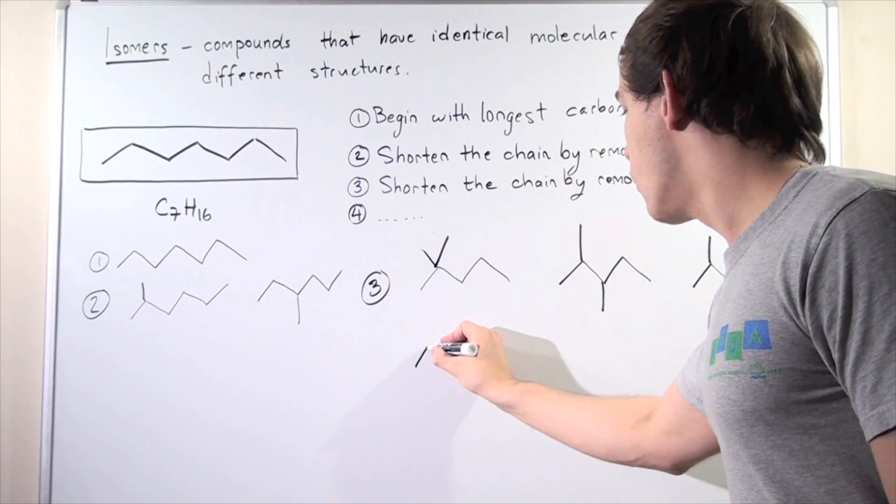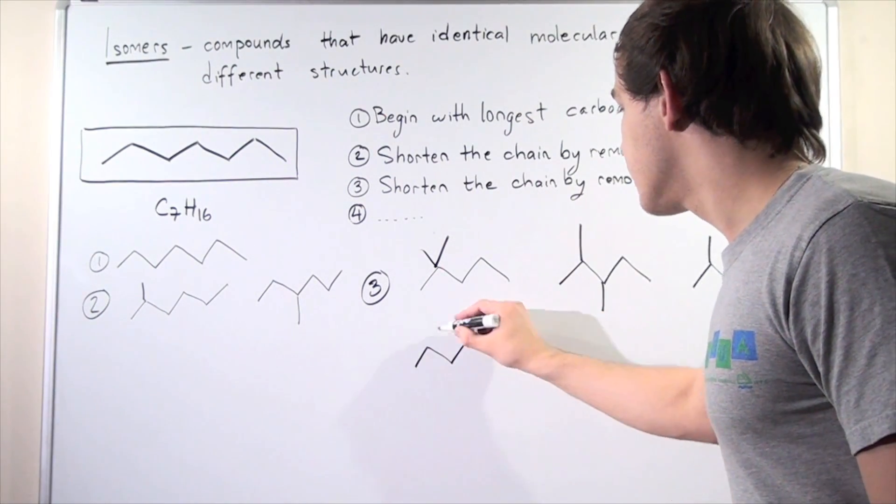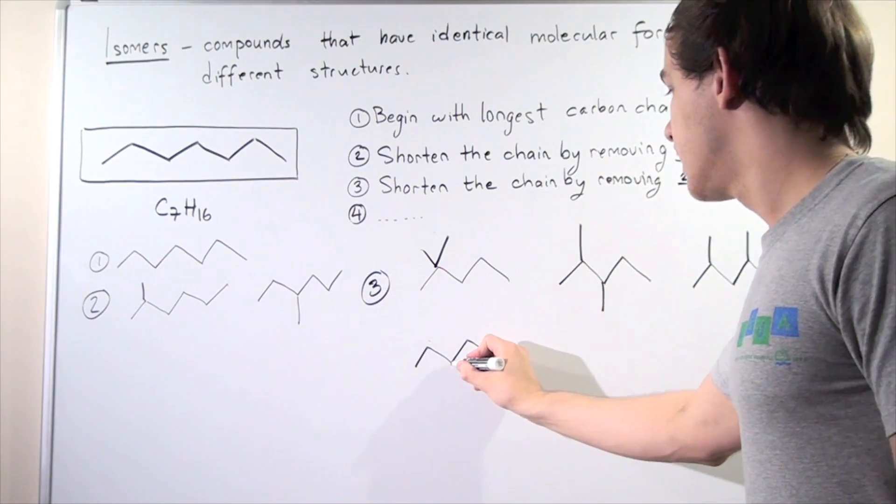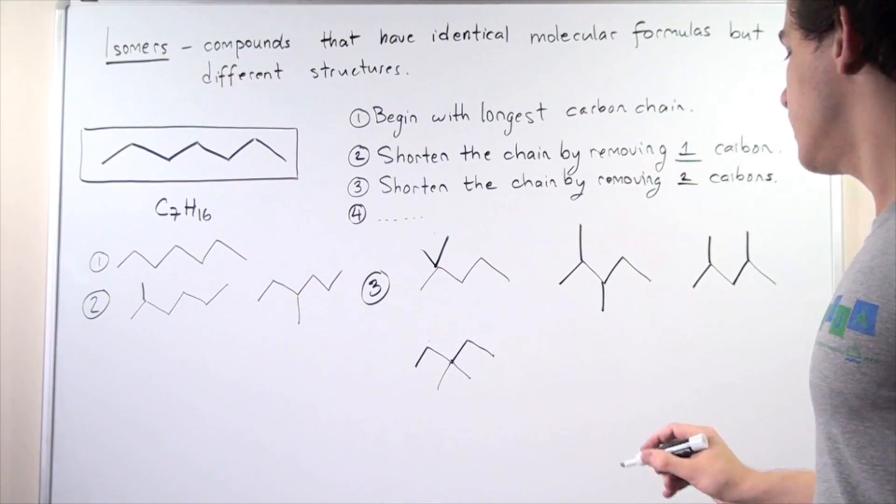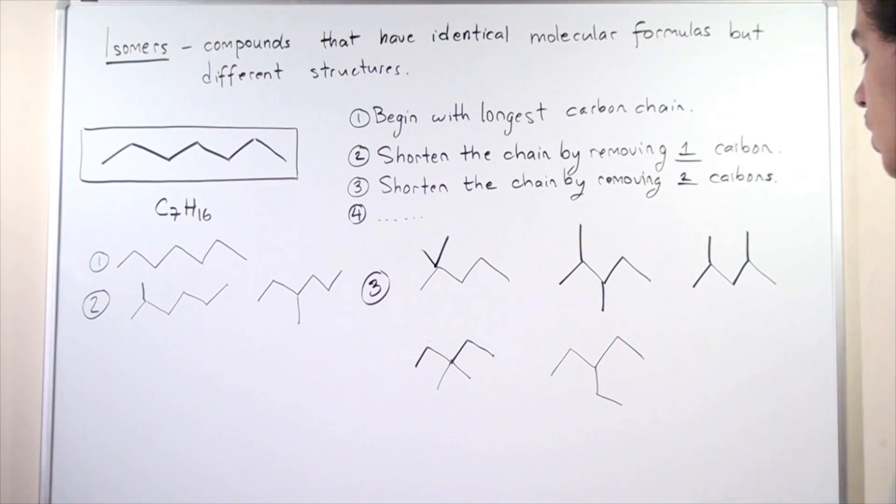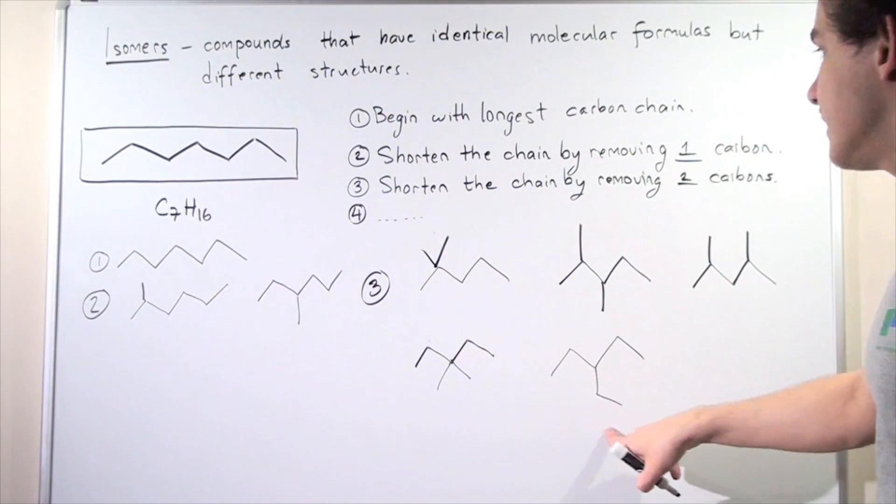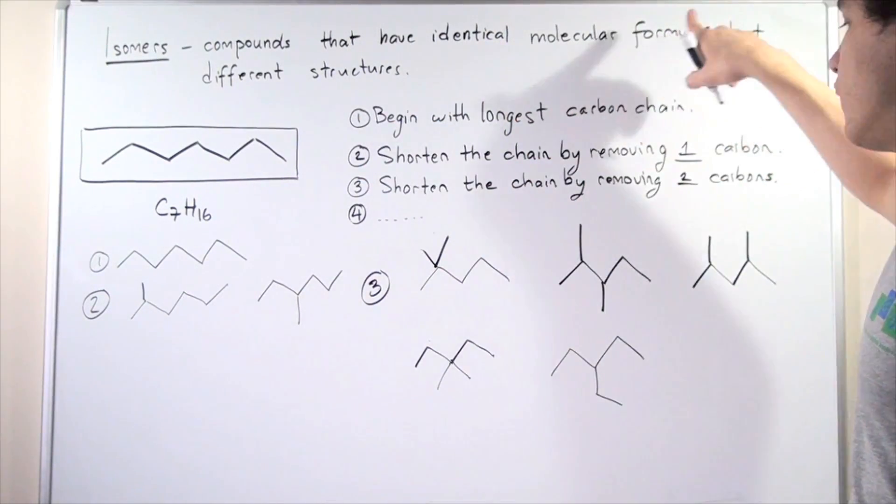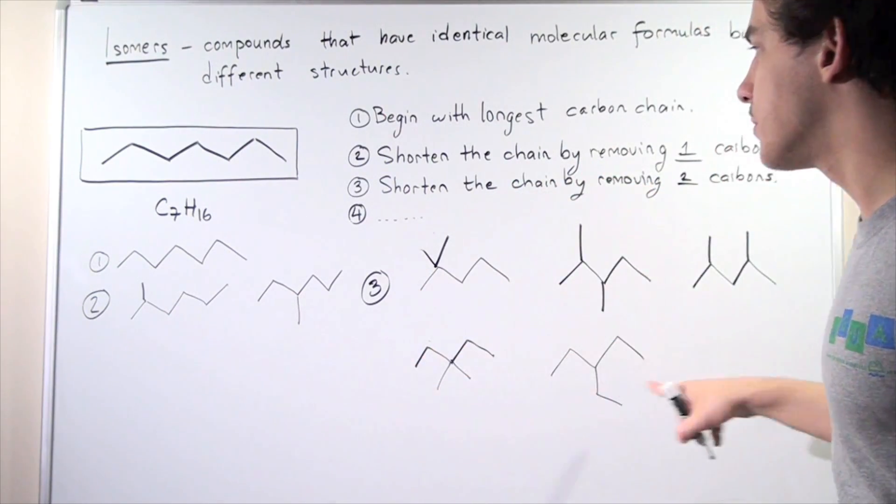So let's see if we can get more isomers. Let's actually take both of these and place them here and let's take one more and place it like so. So all these have different structures but identical molecular formulas. So they're all isomers.